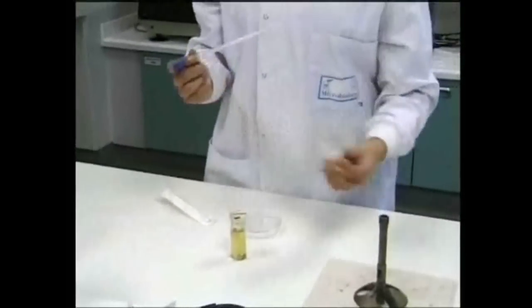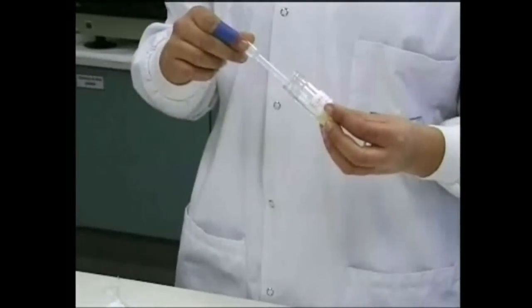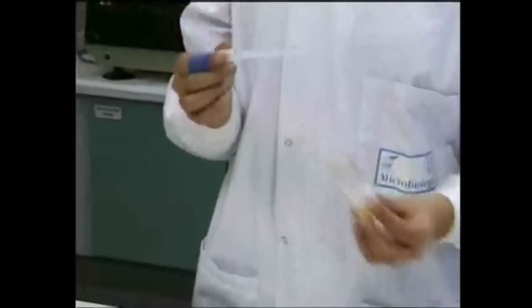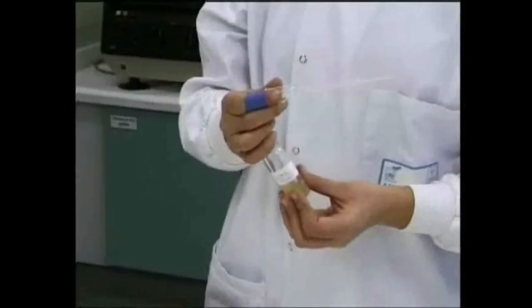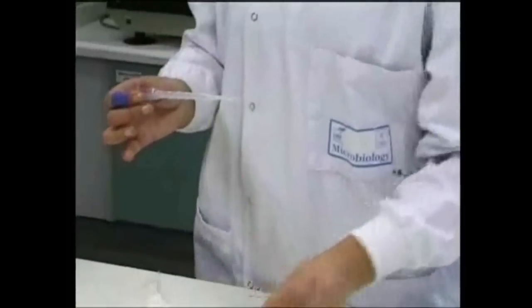The culture bottle is opened and flamed, and between 0.1 and 1 cubic centimeter is removed using a pipette. Notice how the cap is held in the little finger of the pipette hand. The culture bottle is then reflamed, and the top is replaced.